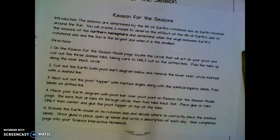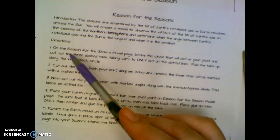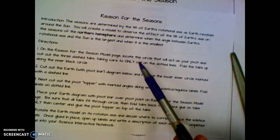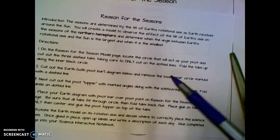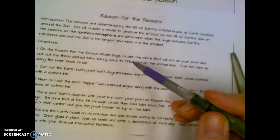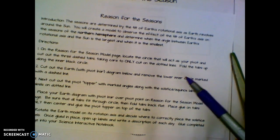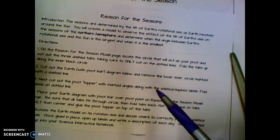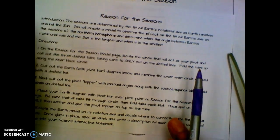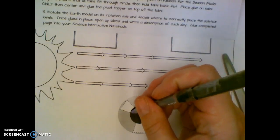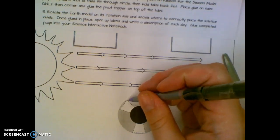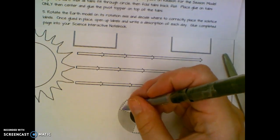Alright, so here are the directions from that assignment. It says on the reason for the season model page, locate the circle that will act as your pivot and cut along the three dash tabs, taking care to only cut on the dotted lines. Fold the tabs up along the inner black circle. So if we look at the other page, here are your tabs. Notice there are no dashed lines here, so you're only cutting here, here, and here.